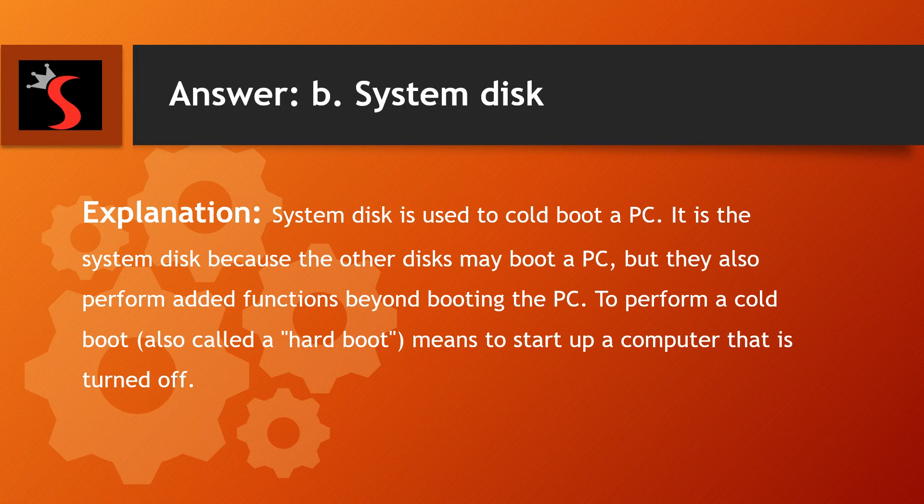The right answer is option B. System disk. Explanation: A system disk is used to cold boot a PC. The other disks may boot a PC but also perform added functions beyond booting. To perform a cold boot means to start up a computer that is turned off.